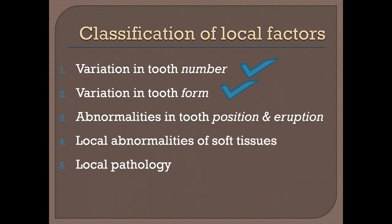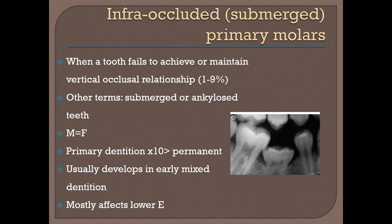Now, in terms of abnormalities in tooth position and eruption, we start with submerged teeth, or infra-occluded teeth. This happens when a tooth fails to erupt to its normal vertical level up to the occlusal plane. The epidemiology is 1 to 9 percent of the population. We can call it submerged, and sometimes we can call it an ankylosed tooth, but not every ankylosed tooth is submerged and vice versa. Males and females are affected equally, and the most commonly affected teeth are the second primary molars.